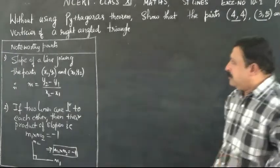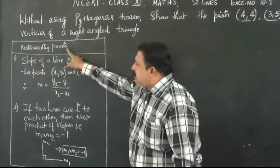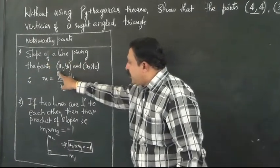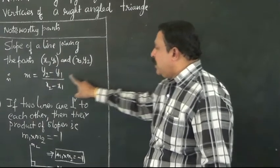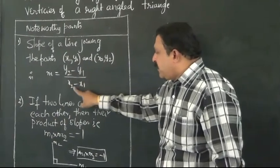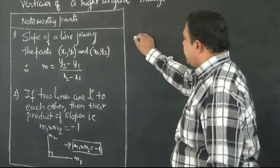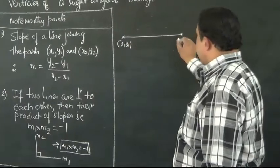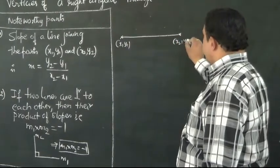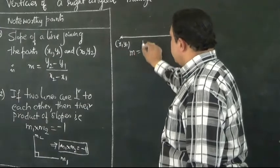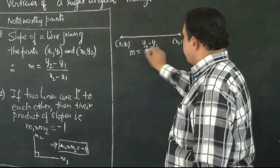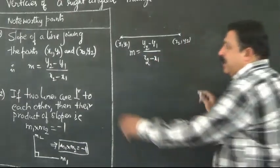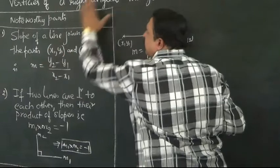Before doing this problem, let us take a look at these points. We know that the slope of a line joining the points (x1,y1) and (x2,y2) is given by y2 minus y1 divided by x2 minus x1. We have a straight line which is the joint of (x1,y1) and (x2,y2). This we have already known and we are making use of this point to solve this problem.